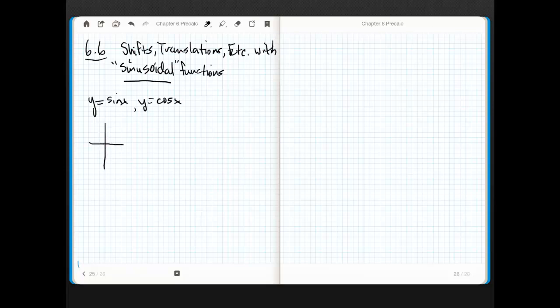And we know what the parent graphs look like, right? We know that sine does this, and we know that cosine does this, like that.